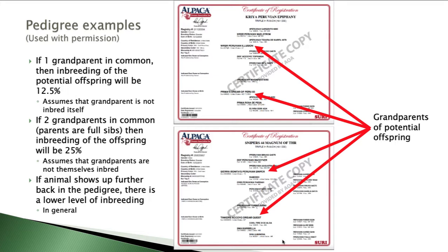If we look at those grandparents and one is the same — for example, if the potential offspring's paternal grandsire and maternal grandsire are the same individual — then there's one grandparent in common and the potential offspring would be 12.5% inbred. This assumes that grandparent is not itself inbred, because if it is, it increases the inbreeding level.